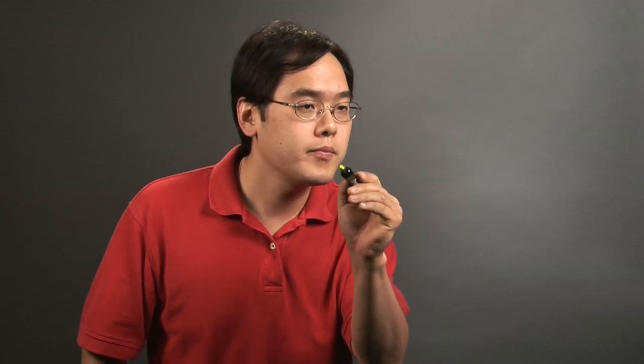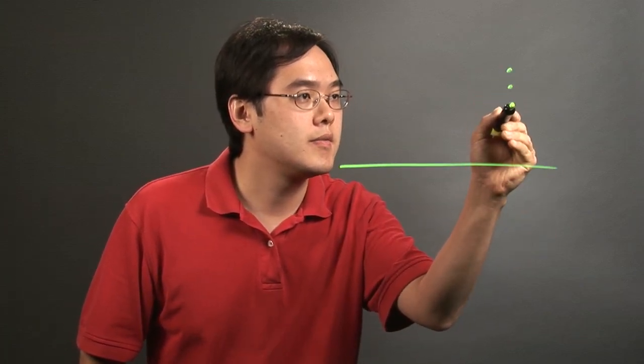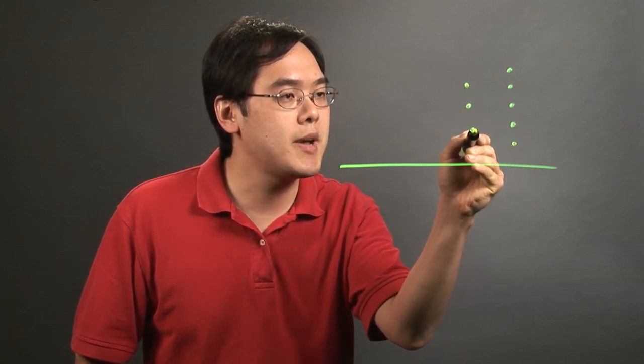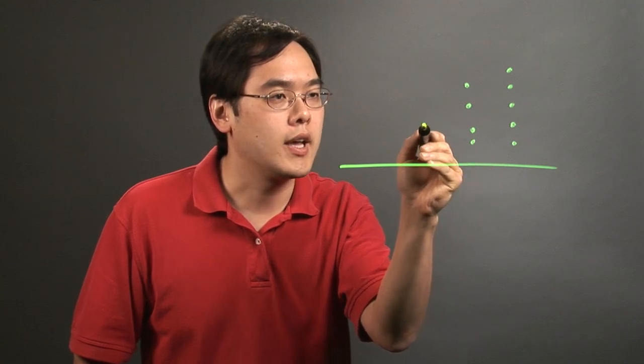So for example you may have something that looks like this. This is an example as to what a dot plot can look like.